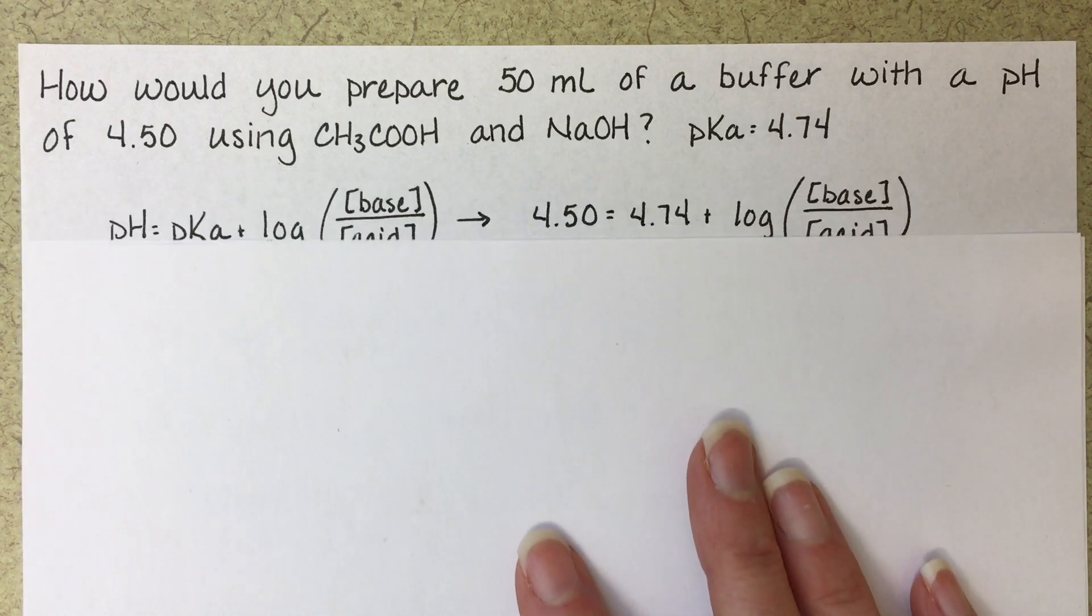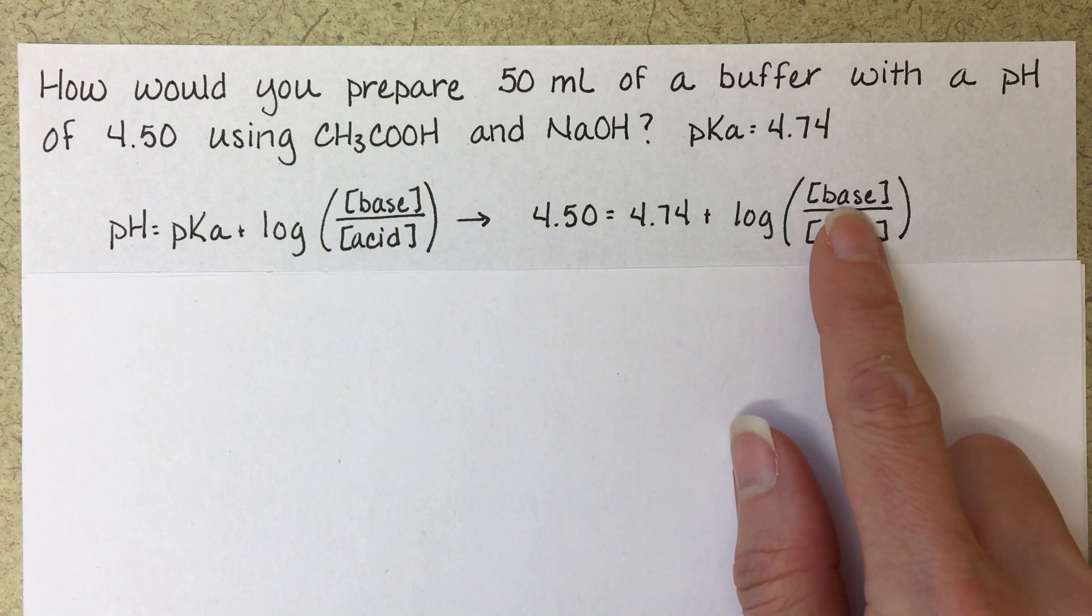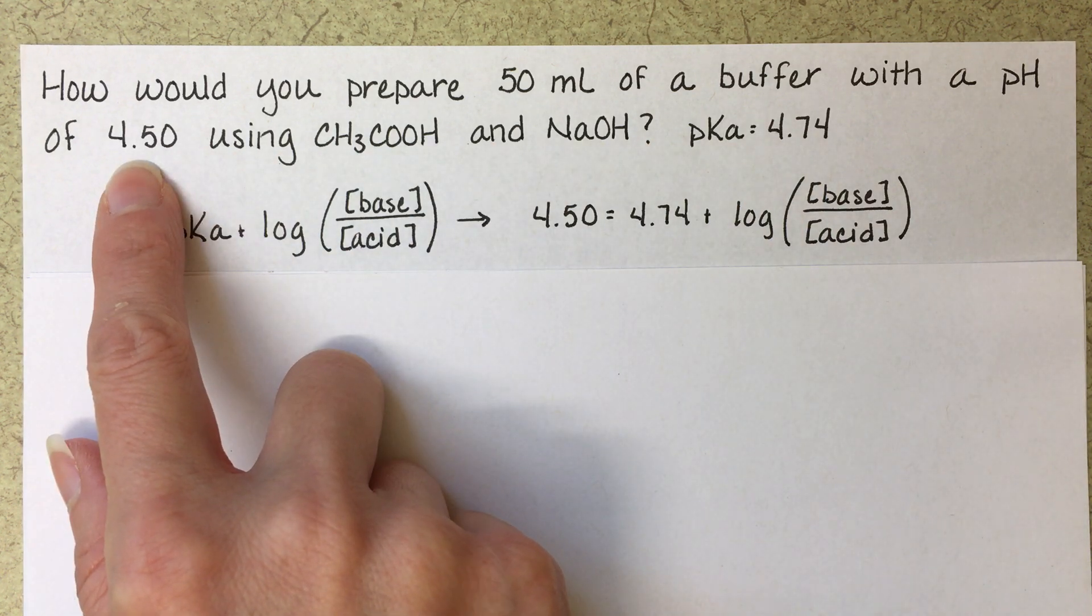The first thing that we're going to do is use the Henderson-Hasselbalch equation to figure out the ratio of base to acid that we need in order to get our pH at 4.50.